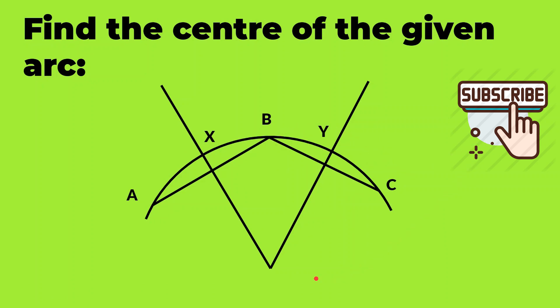So we see that these two perpendicular bisectors intersect at a point which we will name as O, and O is the center of our circle or arc.